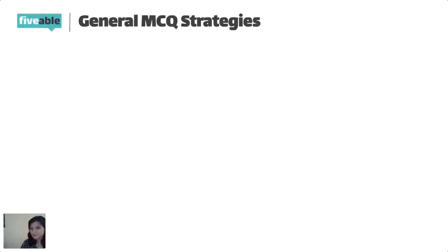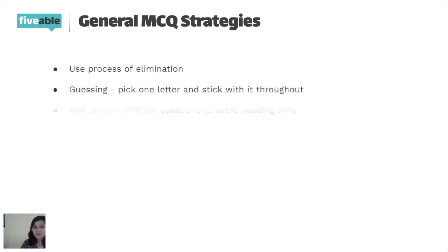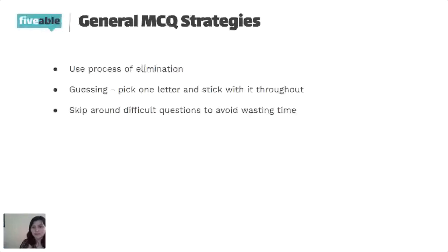Moving on to general multiple choice question strategies. You should use the process of elimination. And if you guess, pick one letter and stick to it — just write D all the way down if you're unsure of the answers, to keep it consistent so you're more likely to get more correct. You should also skip around difficult questions to avoid wasting time. Give yourself time at the end to think about them and go back once you're done with all the easy questions.